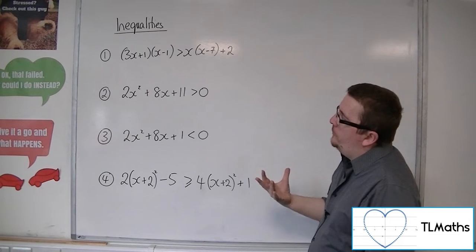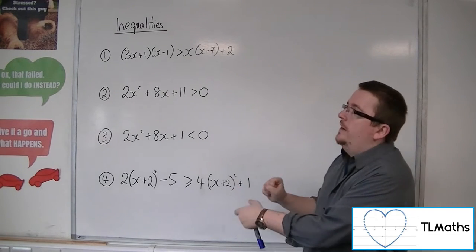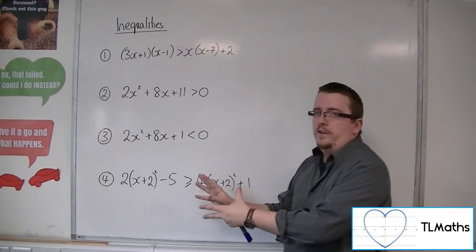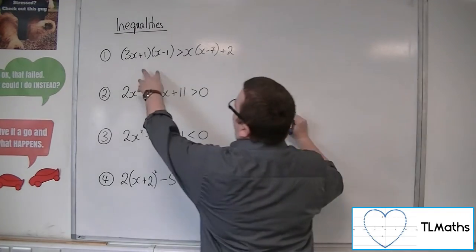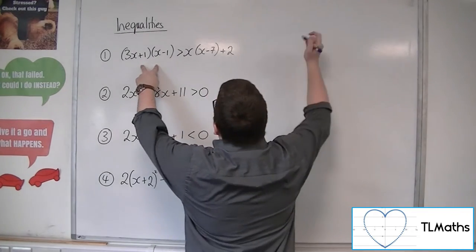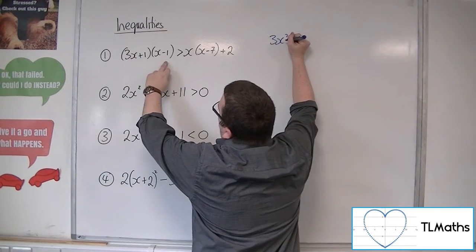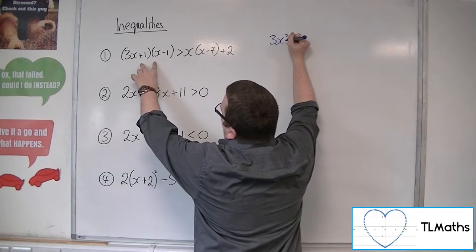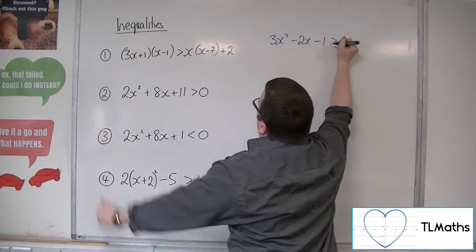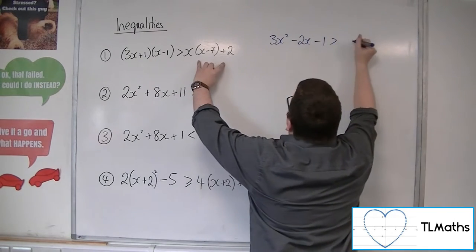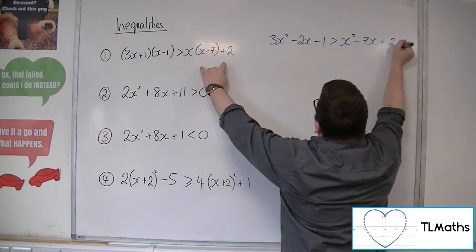What you want to do first is expand all of the brackets and move everything onto one side of the inequality. Expanding the double brackets on the left hand side gives 3x squared minus 3x plus x, so minus 2x minus 1. Expanding the right hand side gives x squared minus 7x plus 2.